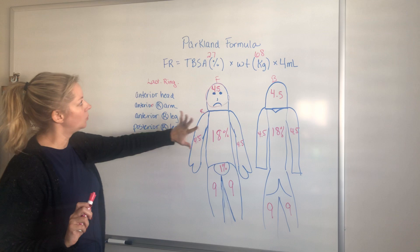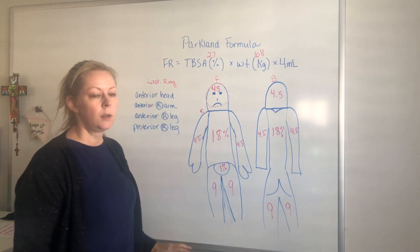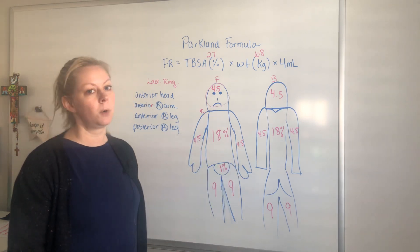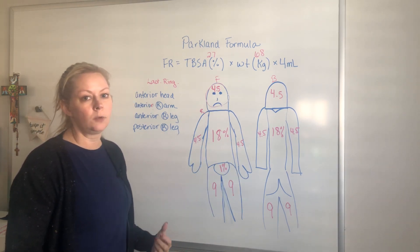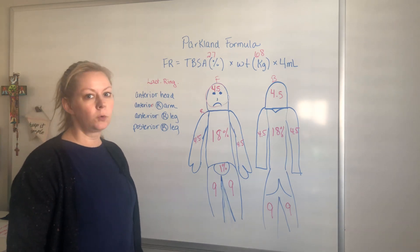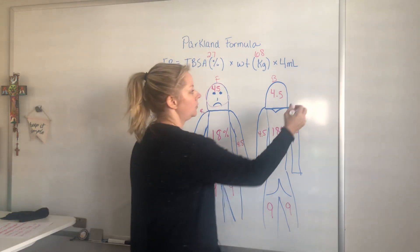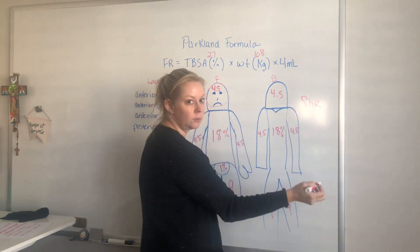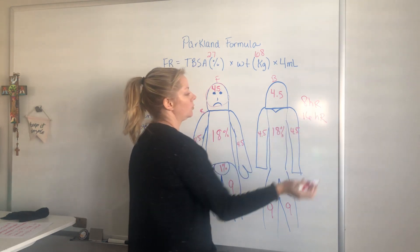I want you to understand the rule of nines and how it relates to the Parkland formula, because if someone has about 25 to 30 percent of their body surface area burned, they're really high risk for going into hypovolemic shock. So we need to give them rapid fluid replacement — the first half of the fluid over eight hours and then the rest over the next 16 hours.